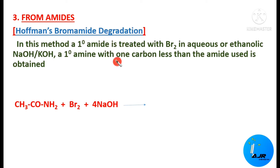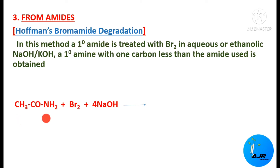In this method, a primary amide is treated with bromine in the presence of aqueous or ethanolic sodium hydroxide or potassium hydroxide. When this primary amide is treated with bromine and sodium hydroxide, we obtain the product CH3NH2.